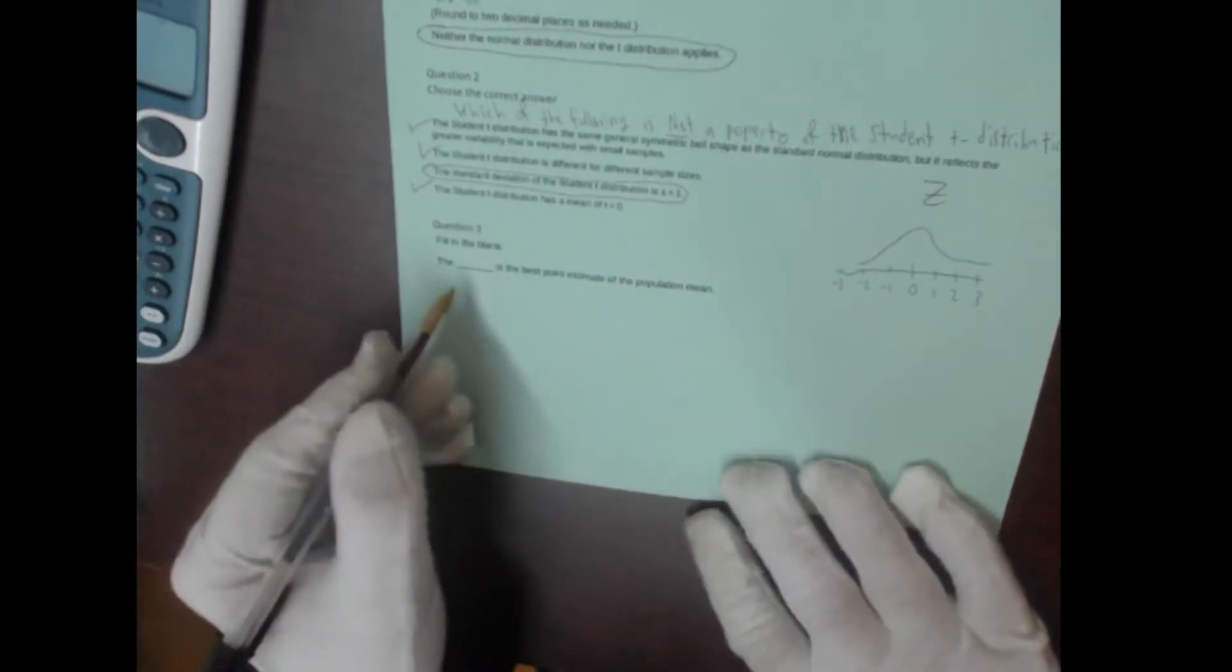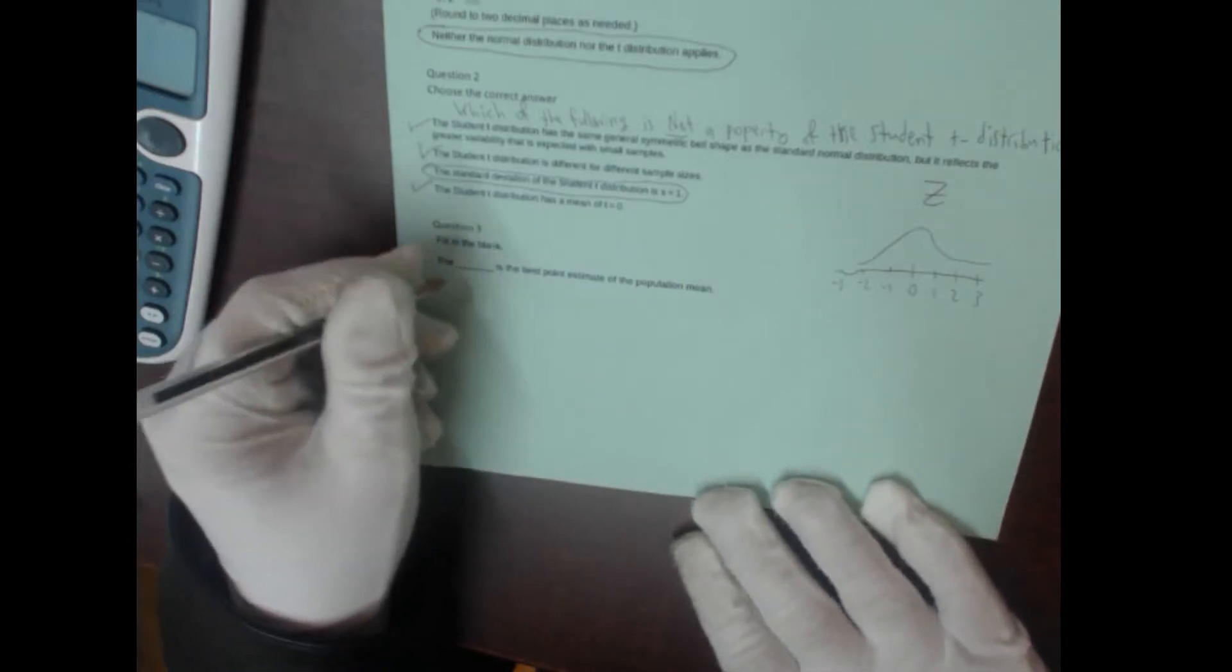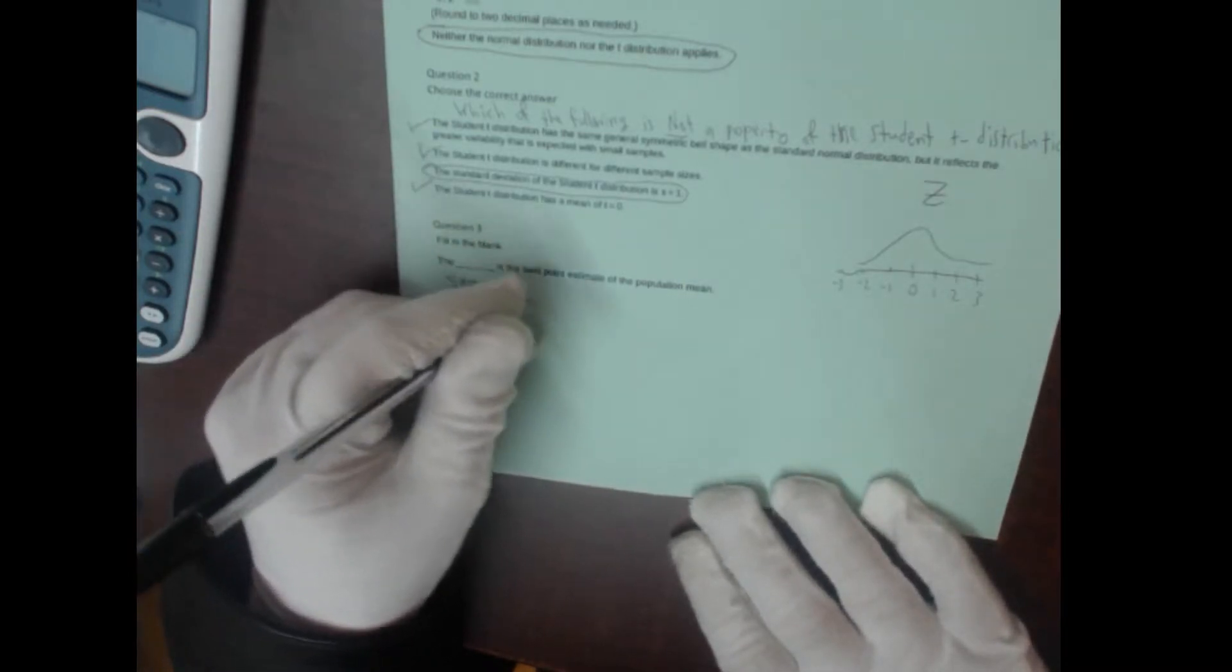Fill in the blank. What is the best point estimate of the population mean? The answer is the sample mean. So just like when we did the proportion one and the actual proportion from our sample was the best point estimate, same thing for our mean. The sample mean is the best point estimate for the population mean, and we construct the confidence interval around the sample mean.